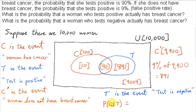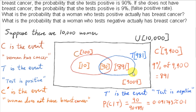For the first question, we want the probability that a woman has cancer given that she tests positive — P(C|T). We get the number of elements in the intersection of C and T, which is 90, and divide by the total number of elements in T, which is 90 plus 891. That's 90 over 981, which works out to about 0.1, or approximately 10%.